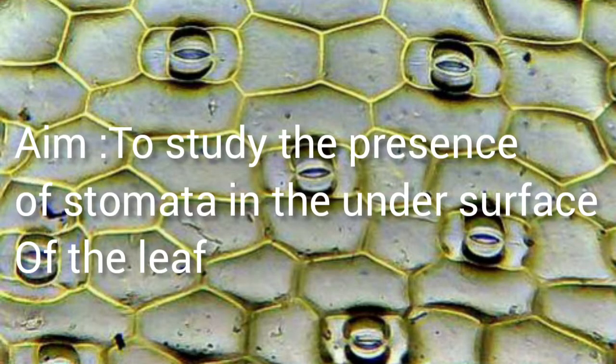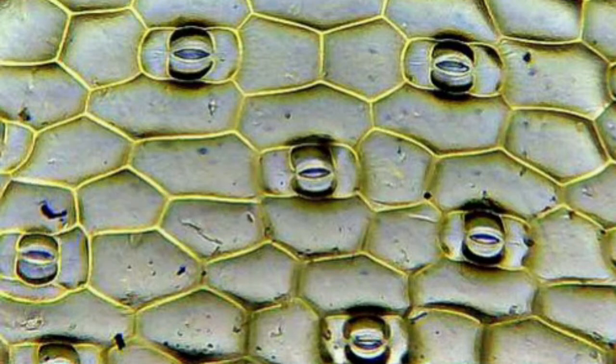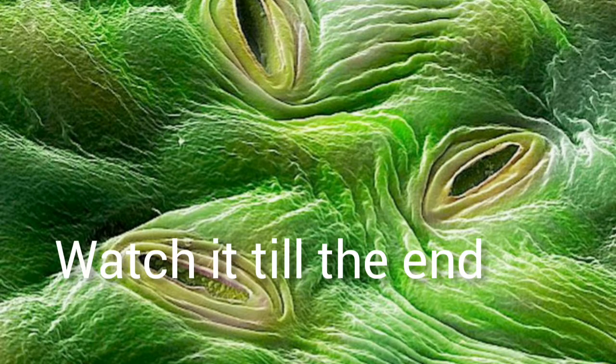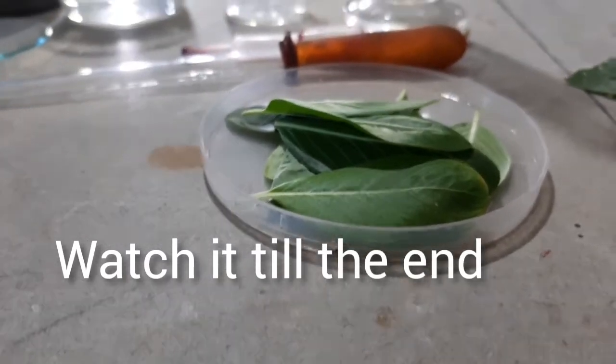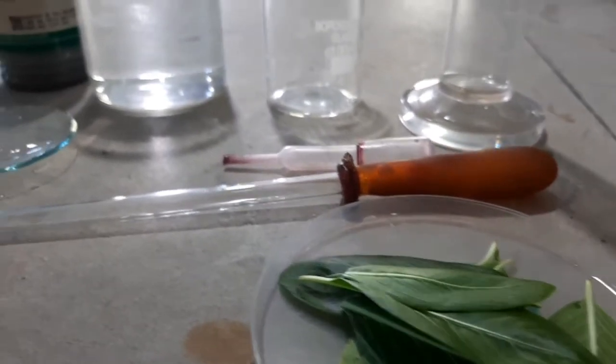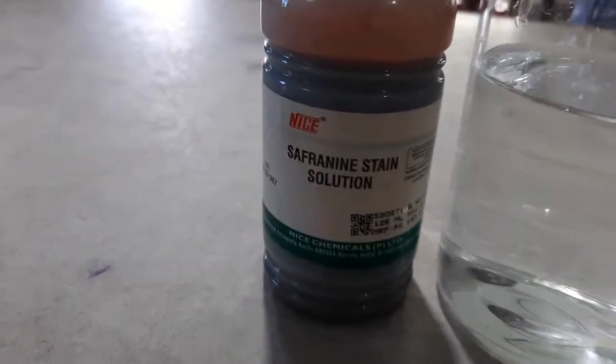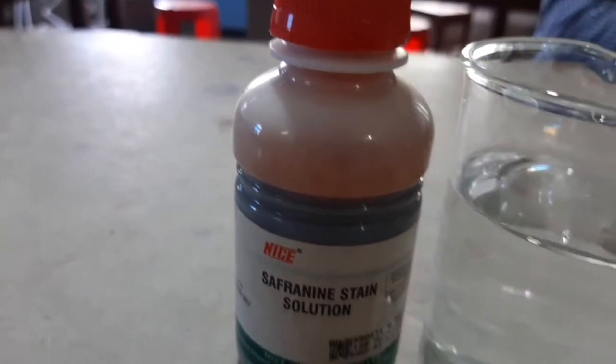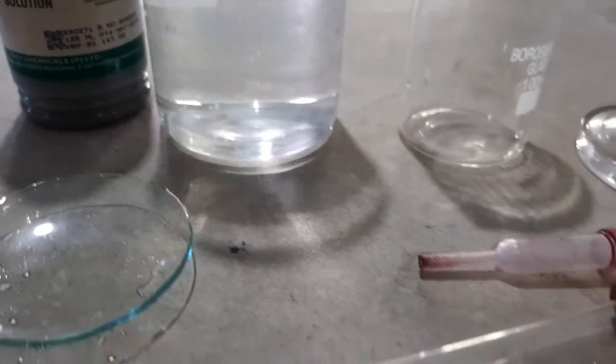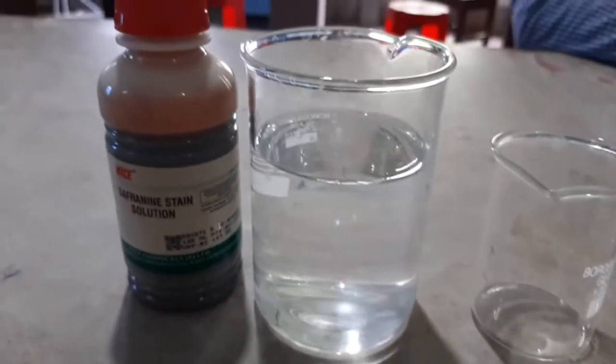So watch the video till the end and try to understand how to perform this activity. My dear students, you can see I have taken some periwinkle leaves. Here is safranine stain that you have to use for this practical. I have taken a watch glass, a dropper, and distilled water is here.